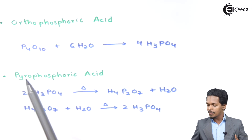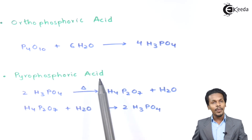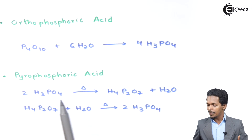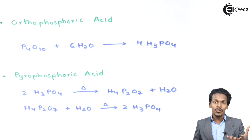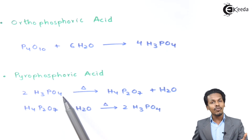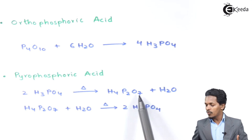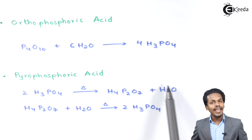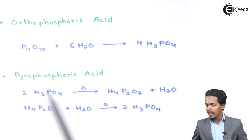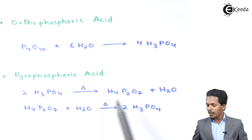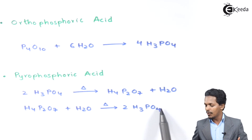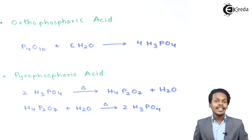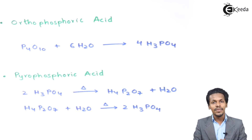The next one is Pyrophosphoric Acid. To prepare it, we take H₃PO₄ and decompose it by providing a lot of heat. The product obtained is H₄P₂O₇ along with H₂O — this is Pyrophosphoric Acid. When Pyrophosphoric Acid is further treated with water, it gives back H₃PO₄. So these were the preparations of the Oxy Acids of Phosphorus.